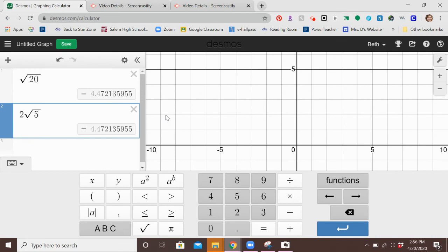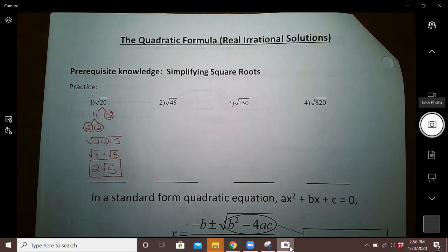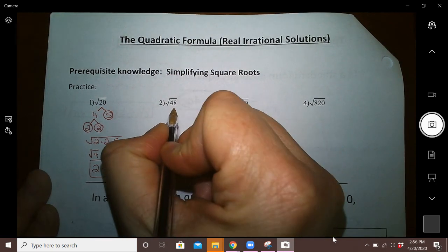Okay, next: square root of 48. Well, there's lots of things that you could break 48 into. You could do 2 times 24, 4 times 12, 6 times 8. It doesn't matter where you start; we're going to end the same way every time. I'm going to go with 6 times 8.